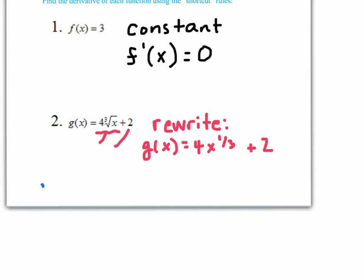Now, from here we can simply find our derivative. So g prime of x, using the power rule, we're going to take 1 third, multiply it by 4, that gives us 4 thirds, x, we're going to drop 1 third by 1, meaning we're going to say 1 third minus 1, which is 1 third minus 3 thirds, which is negative 2 thirds.